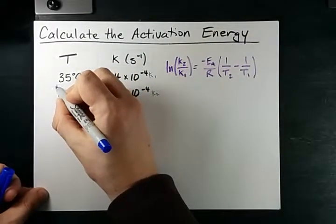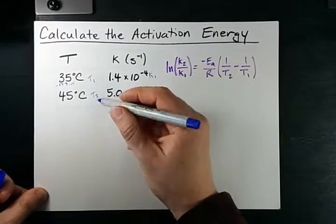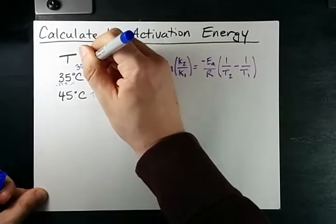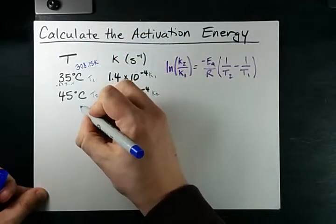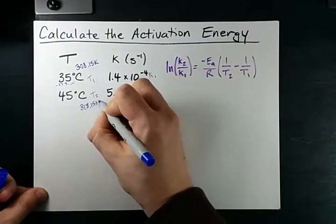I do that by adding 273.15 to them, so 35 degrees Celsius becomes 308.15 Kelvin and 45 degrees Celsius becomes 318.15 Kelvin.